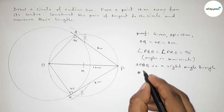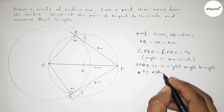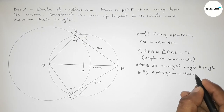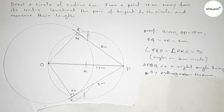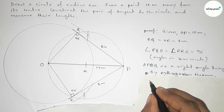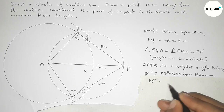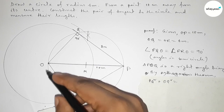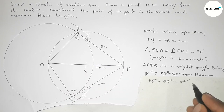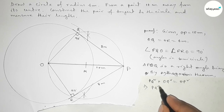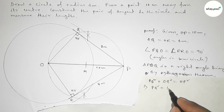By the Pythagorean theorem for a right angle triangle: PQ² + OQ² = OP². We need to find PQ. Substituting: PQ² + 6² = 10², which gives PQ² = 10² − 6².